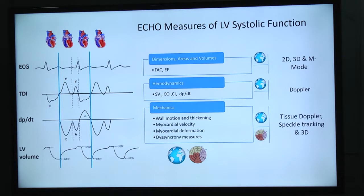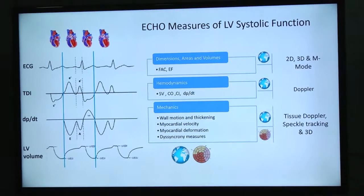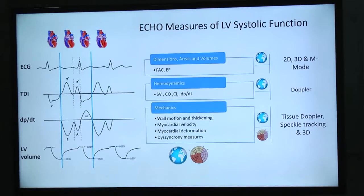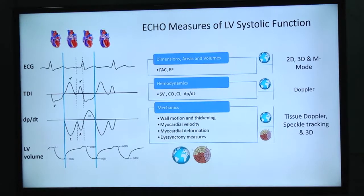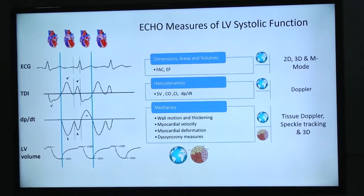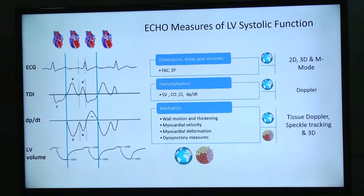Now it's time to quantify LV systolic function, and there are many ways to do that. The most popular ones are measuring dimensions, areas, and volumes — like fractional area change and ejection fraction — that give us a good idea of global function. We can also assess hemodynamics by calculating cardiac output and VTI when there is some degree of mitral regurgitation. A good way also is to study wall mechanics by wall motion and thickening, myocardial velocity, myocardial deformation, and timing. The best technologies for that are tissue Doppler, speckle tracking, and 3D echo.